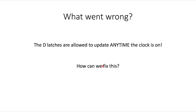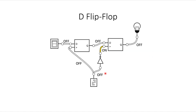So what went wrong? The problem is that the D latches are allowed to update any time the clock is on — by D latch I mean clocked and-or latch. So how can we fix this? The solution is to use something called a D flip-flop. Let me explain what this thing does and then it'll become clear why this is a useful fix for the problem we saw before.